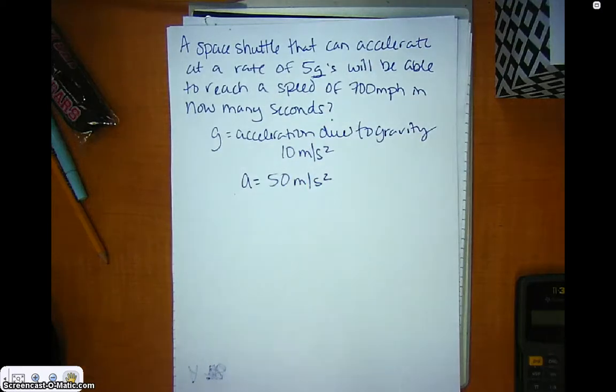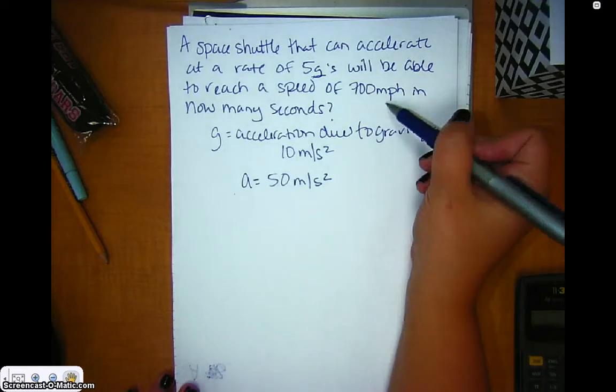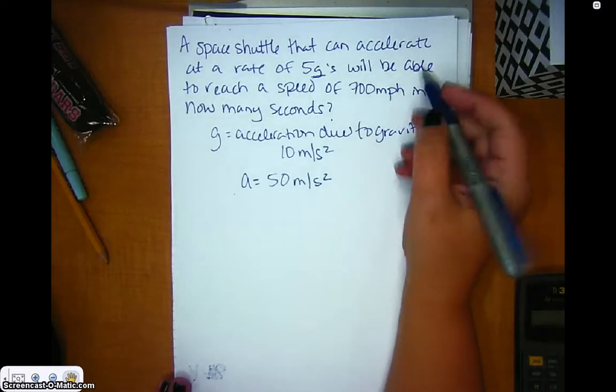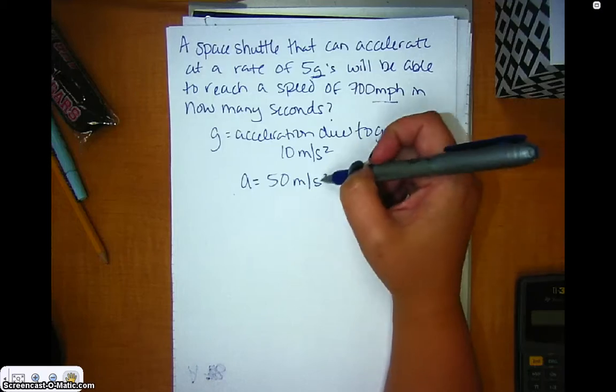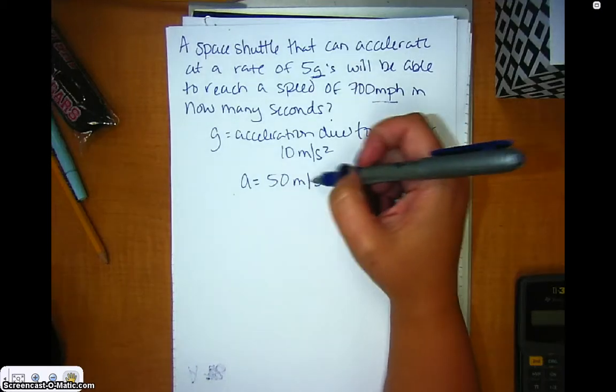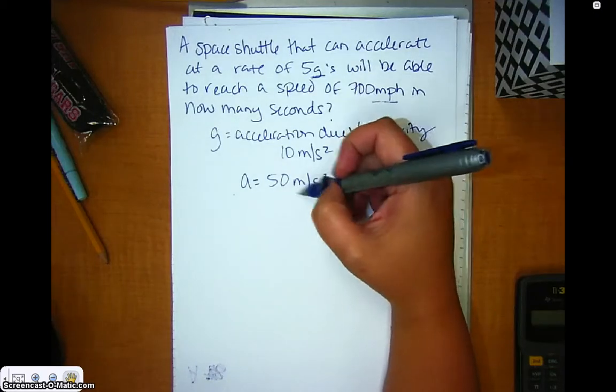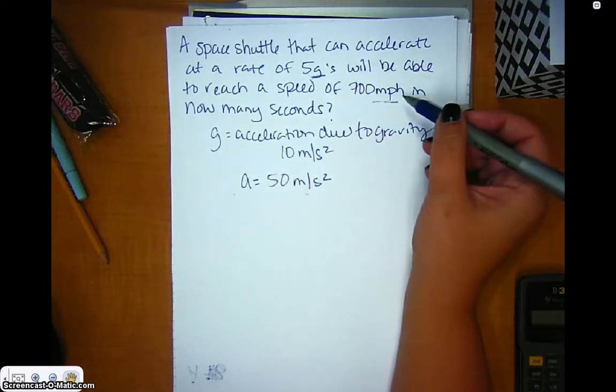And we want to know what the time is. We know that the change in velocity is from 0 to 700 miles per hour. So we're going to have to do some conversions so it will be in meters per second to work with our acceleration unit. I'm going to start there.